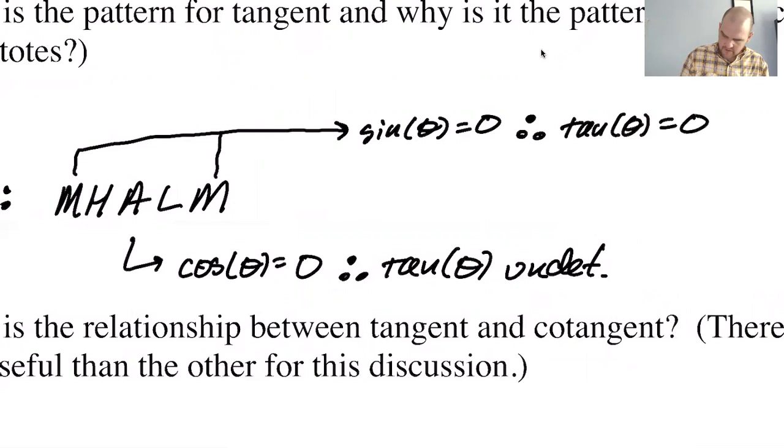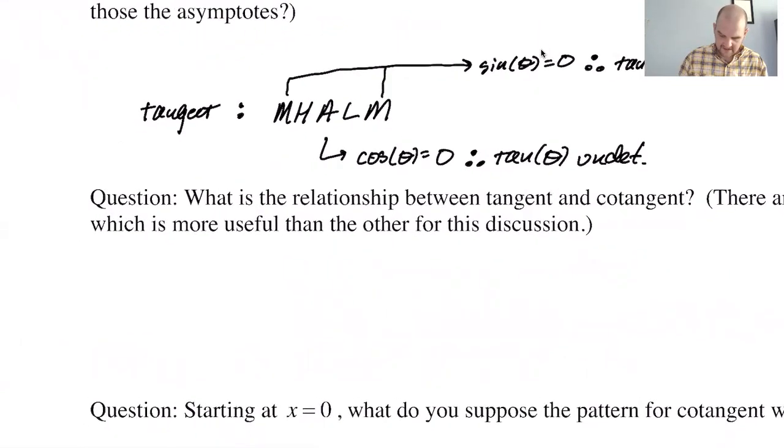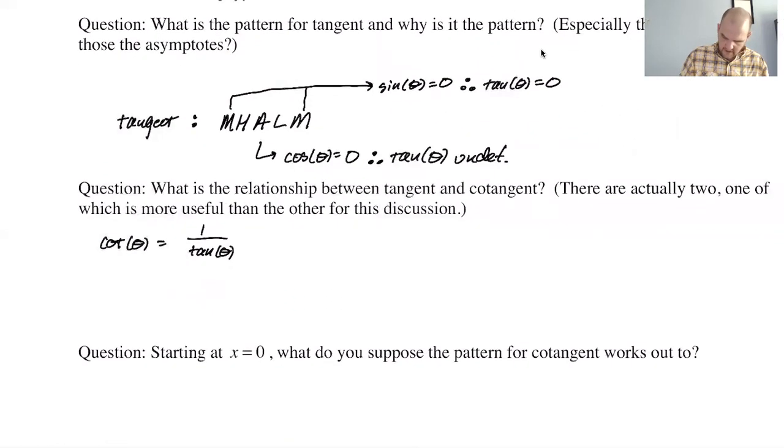So this is useful, because cotangent is the reciprocal of tangent. Since cotangent is one over tangent, just kind of think it through. If cotangent is the reciprocal of tangent, then any time sine is equal to zero, tangent was equal to zero. Anytime sine is equal to zero, cotangent will be undefined.